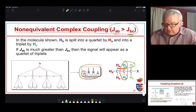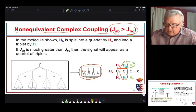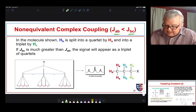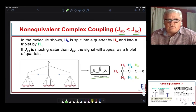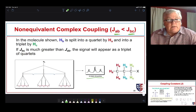If we were to reverse that, instead of seeing a quartet of triplets, we now are just going to change the direction so that JAB is now much smaller than JBC, and we see a nice triplet of quartets. So, we see a quartet of triplets versus a triplet of quartets.